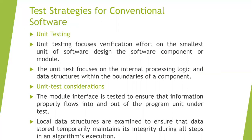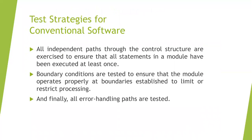Module interface: we check whether modules are correctly interfacing with each other. Local data structure: whether data has been assigned correctly and maintains its integrity. Independent paths: we need to consider all statements and all independent paths in the control structure, checking whether they are exercised correctly. Boundary conditions: we check in loop statements. Finally, all error handling paths must be tested. These are the five types of consideration in unit testing.